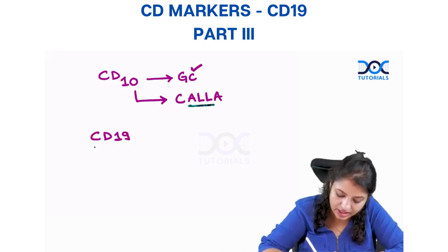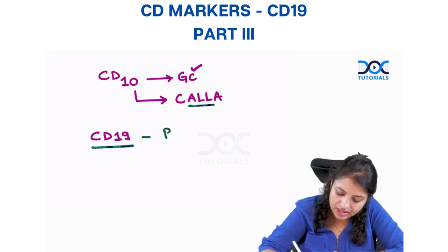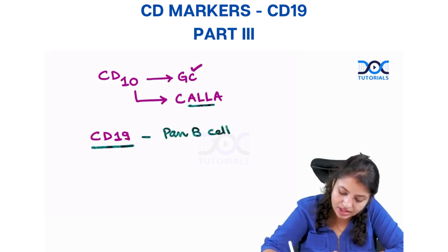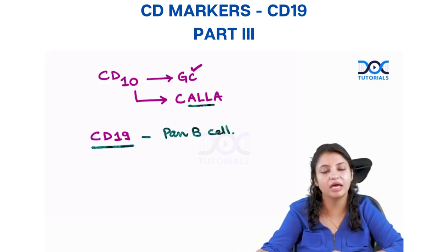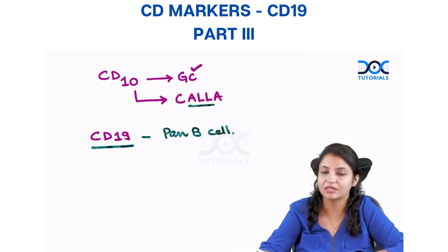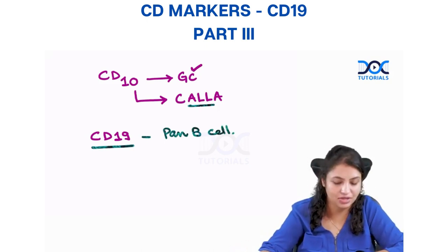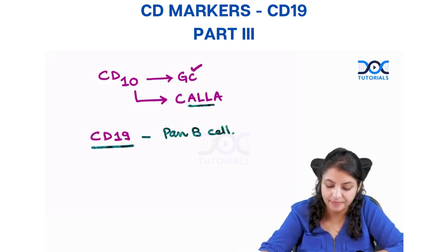Now coming to CD19. CD19 is a pan B cell marker — just like there is a pan T cell marker, the pan B cell marker is CD19, and that you have to remember.